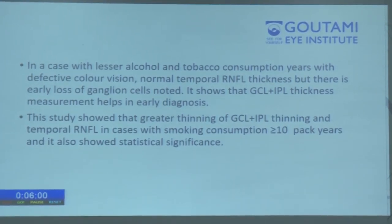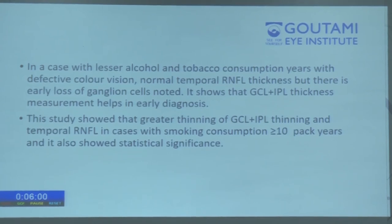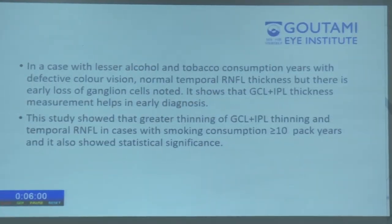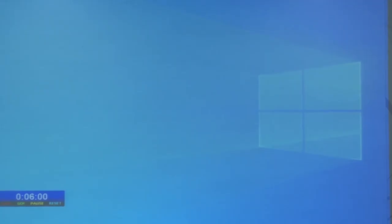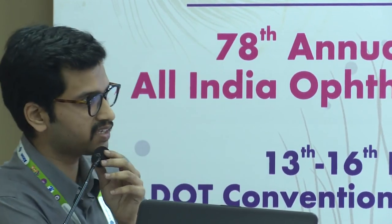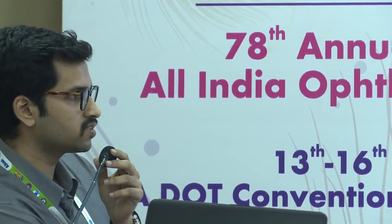During Q&A, the moderator asked what normally happens to the GCL+IPL layer with aging, to which the presenter replied that it thins out. The moderator noted that people who have consumed alcohol for 20 or 30 years are likely to be older than those who consumed for 10 years, introducing a natural confound. The presenter acknowledged this as a limitation, noting that an age-matched case-control study would be ideal, and that the validity of the current findings would be better established by documenting the natural decline over time versus substance-related decline.